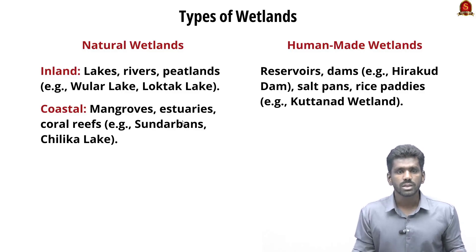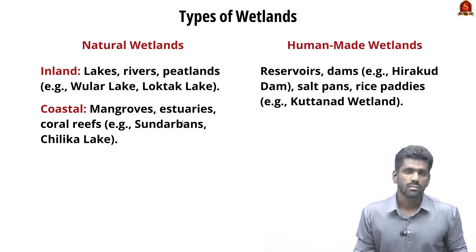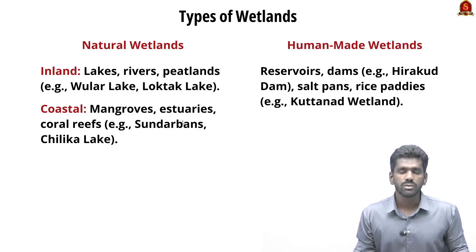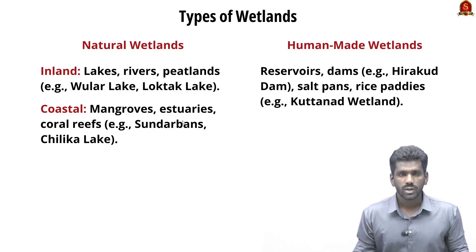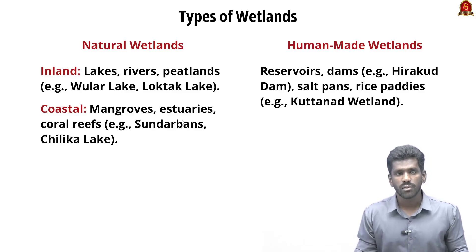Then there are coastal wetlands. Mangroves, estuaries, lagoons, coral reefs and salt marshes belong to coastal wetlands. For example, the Sundarbans and Chilika Lake come under coastal wetlands.